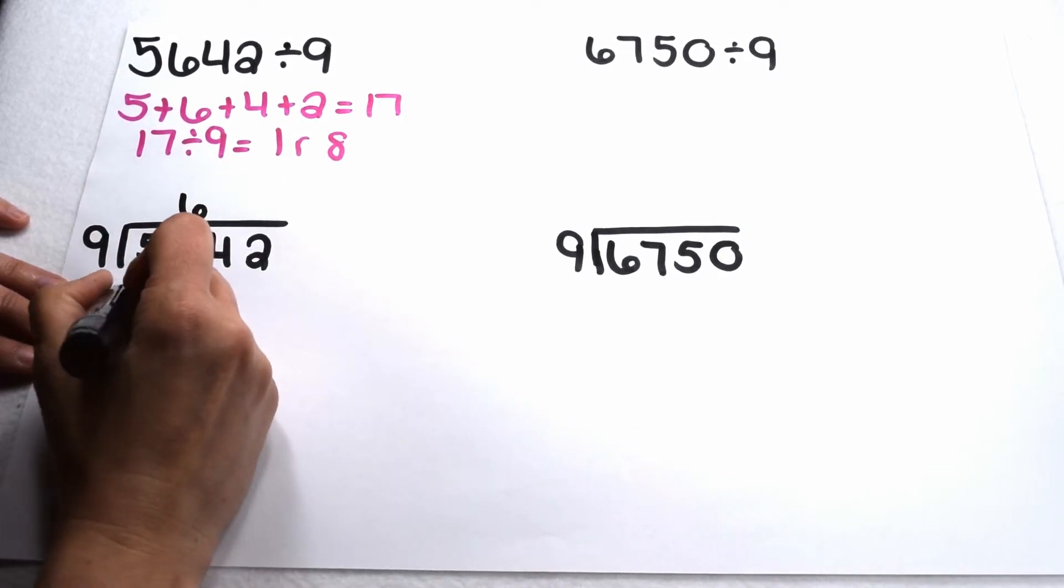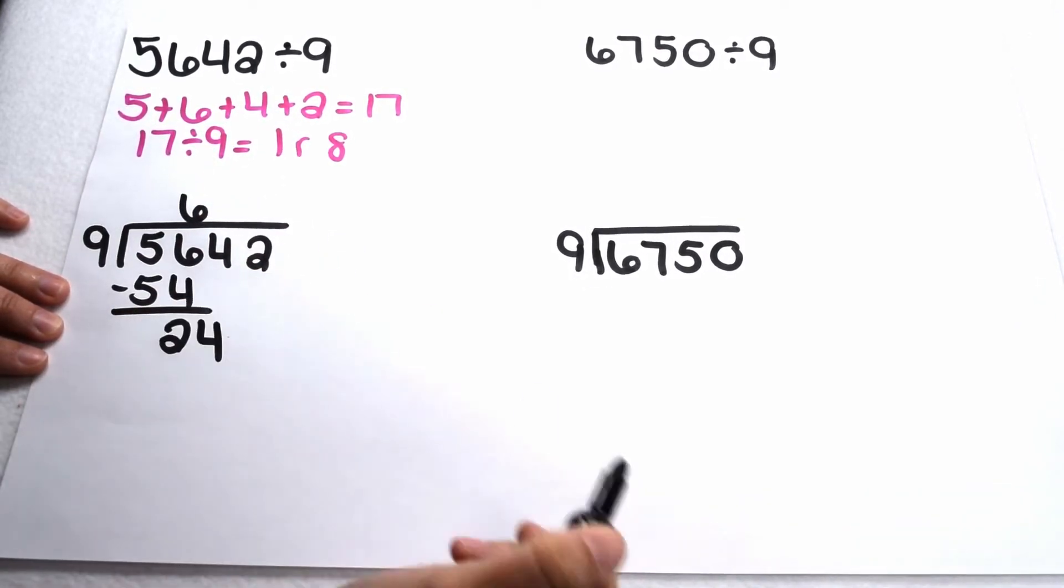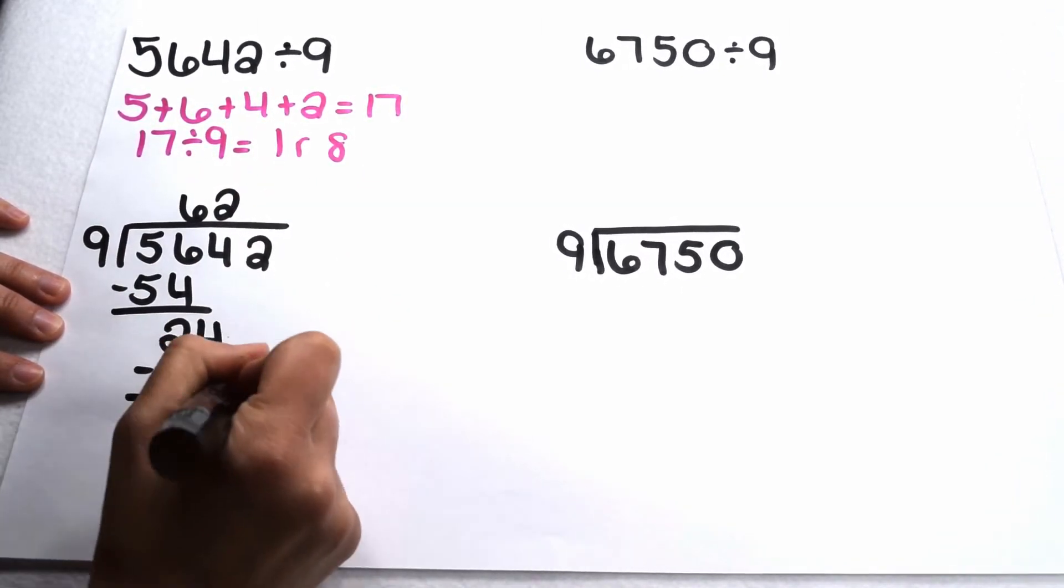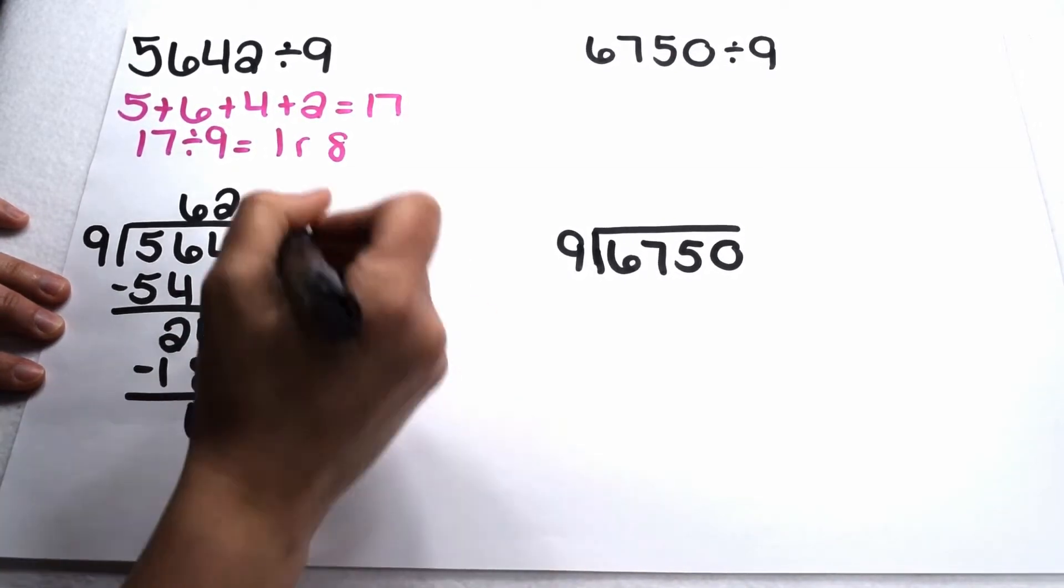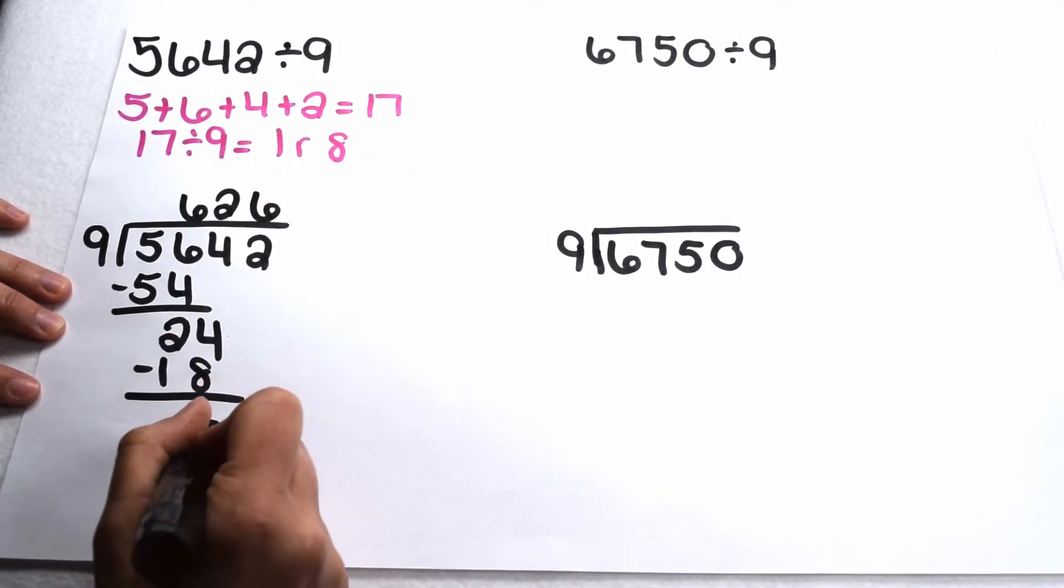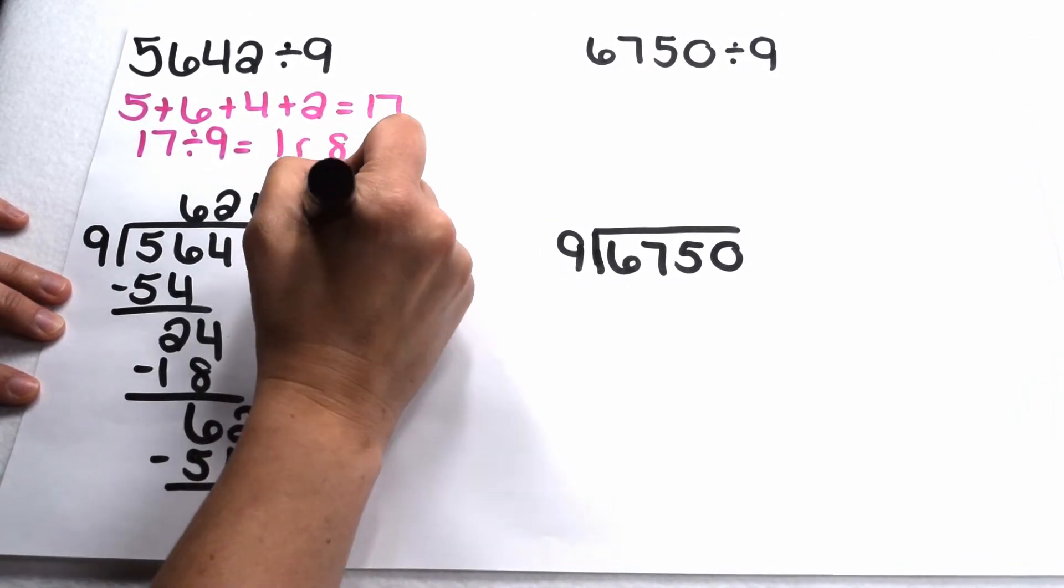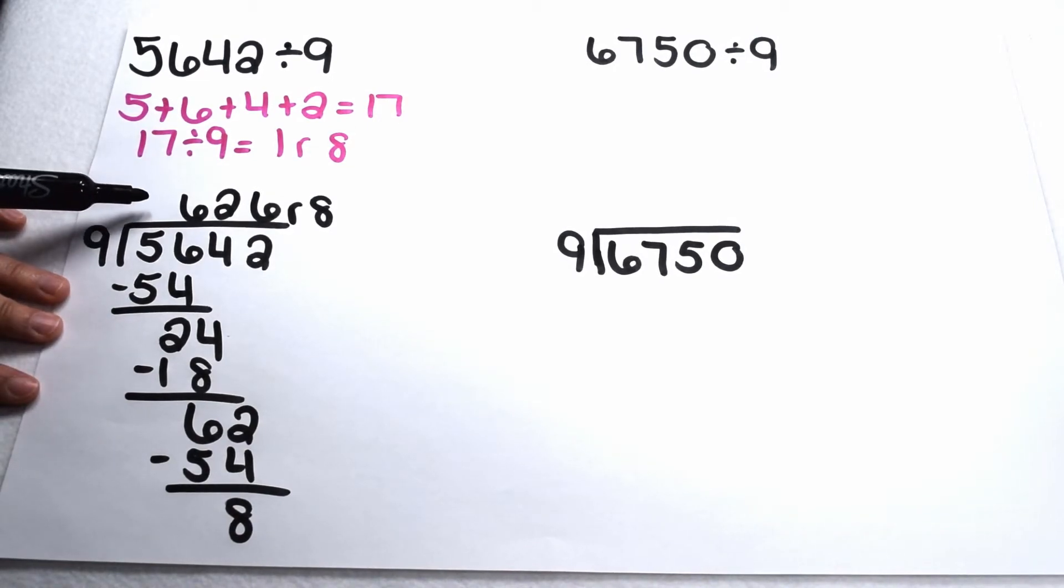9 goes into 56, 6 times, subtract out my 54. 56 minus 54 leaves me with 2, bring down my 4. 9 goes into 24 twice, minus 18. 24 minus 18 leaves me with 6, bring down my 2. 9 goes into 62 again, 6 times, again subtract out 54. 62 minus 54 leaves me with a remainder of 8. So like we predicted, 5,642 divided by 9 gives me 626 with a remainder of 8.